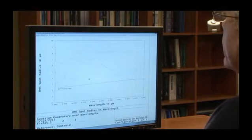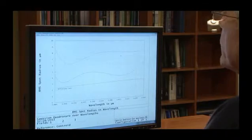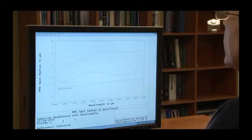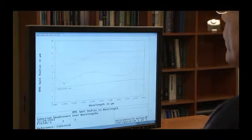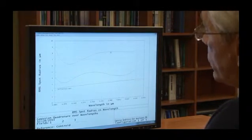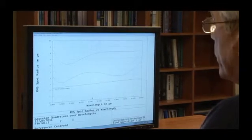If I go back to my RMS wavelength plot and I double click this to update it, you can see that we're reducing the RMS spot size by about a micron, possibly more, across the whole wavelength range at each field point. It made most difference in the red in this case, but it made big differences in the blue and the green as well.